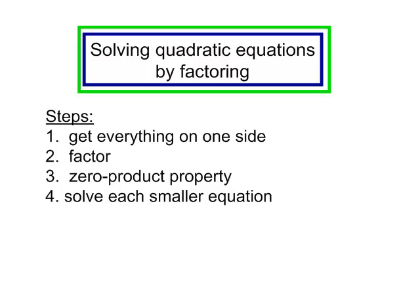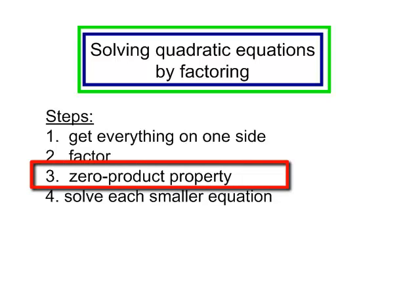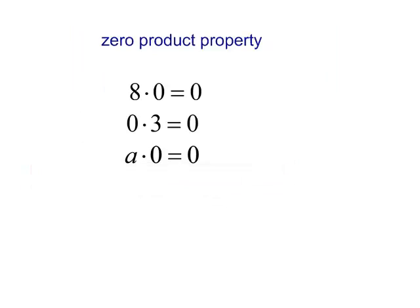I do want to explain a little bit about the zero product property. What is 8 times 0? 0. 0 times 3? It is 0. A times 0 is 0.